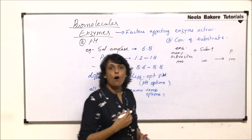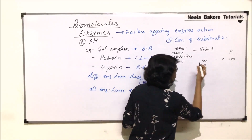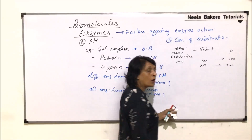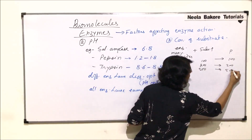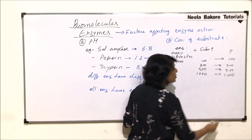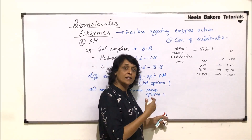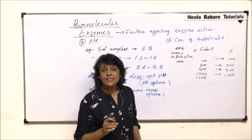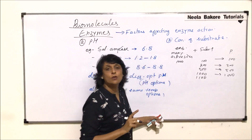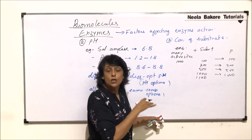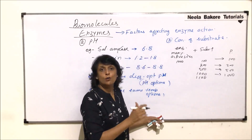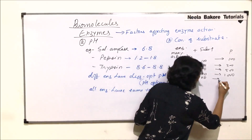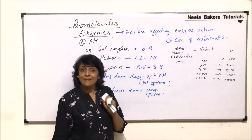If we have one hundred substrate molecules, all one hundred substrates would be converted into one hundred product molecules. As we increase substrate concentration to two hundred, all two hundred molecules bind to active sites and two hundred product molecules are synthesized. Bringing it to five hundred gives five hundred products; at one thousand substrates we get one thousand product molecules. If we increase beyond one thousand, only one thousand active sites are available, so all active sites are occupied.